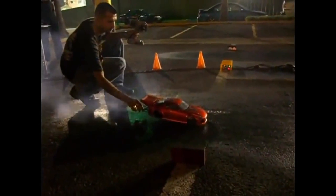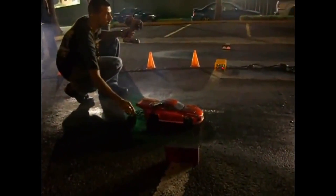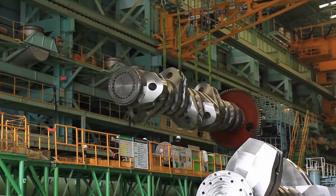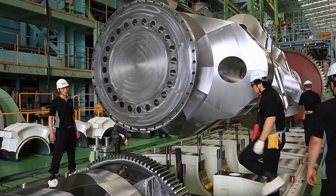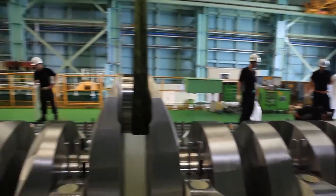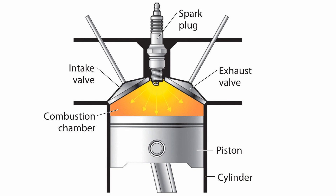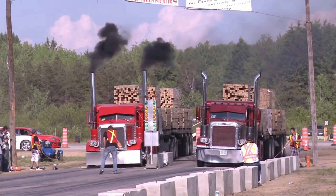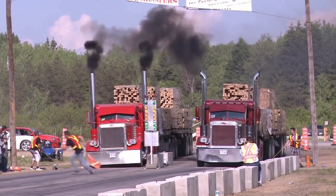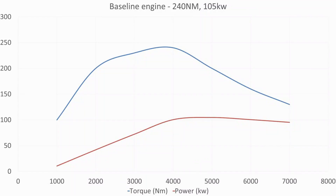High-power low-torque engines are lighter because they don't need to deal with as much force from each combustion event, but they do need to deal with higher inertial forces. High-torque low-power engines have to be much beefier because each component has to deal with a lot of force from a single combustion event. This gives them their lazier character, while high-powered engines like to rev more.